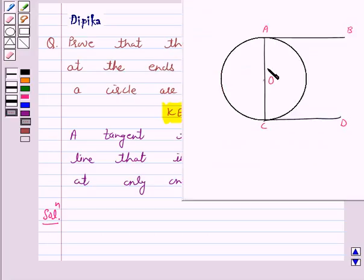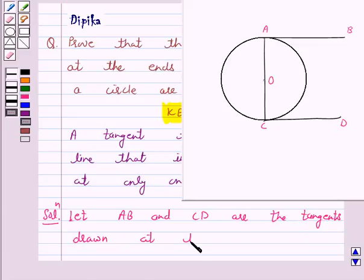We are given a circle with center O and diameter AC. Let AB and CD are the tangents drawn at the ends of a diameter of a circle.